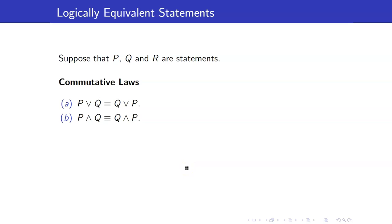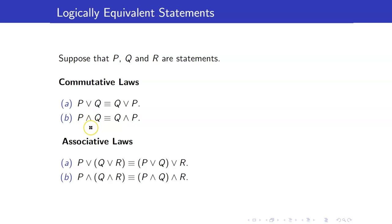Let us consider other logically equivalent statements. Suppose we have three statements P, Q, and R. We have the commutative laws: disjunction is commutative and so is conjunction — the order does not matter. We also have the associative law, similar to addition and multiplication. If all operations are just or, it doesn't matter where you put the parentheses, so we can write P or Q or R and drop the parentheses. Similarly, that is true for conjunction.